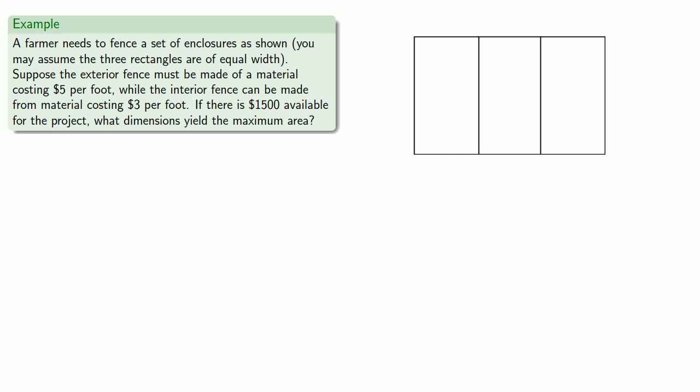A farmer needs to put a fence around some enclosures as shown, and we may assume that the three rectangles are of equal width. Suppose the exterior fence must be made of a material costing $5 per foot, while the interior fence can be made from cheaper material costing $3 per foot. If there is $1500 available for the project, what dimensions yield the maximum area?